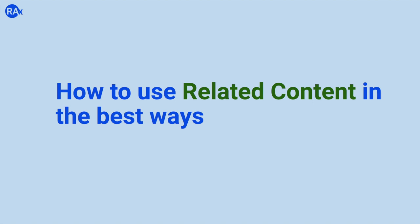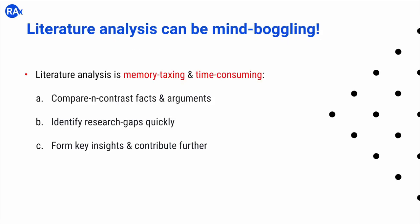This session is going to be all about the different ways in which you can actually use Related Content. Literature analysis itself is very mind-boggling, partly because it demands a lot of memory retention and is also time consuming. You always have to compare and contrast different facts, arguments, and figures while doing a literature survey, and constantly identify research gaps which would be your research opportunities. As you figure them out, you have to come up with your own key insights, inferences, and conclusions, and try to contribute through your own original ideas and approaches.